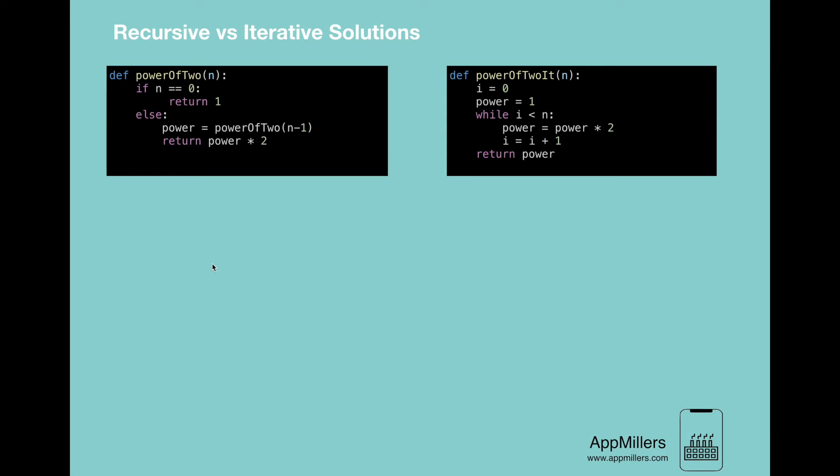Recursion repeatedly invokes the method call mechanism, which creates overhead that can be expensive in both processor time and memory space, while iteration does not. Recursive algorithms can be very space inefficient — each recursive call adds a new layer to the stack, meaning that if your algorithm recurses to a depth of n it uses at least O(n) memory. For this reason it's often better to implement a recursive algorithm iteratively.